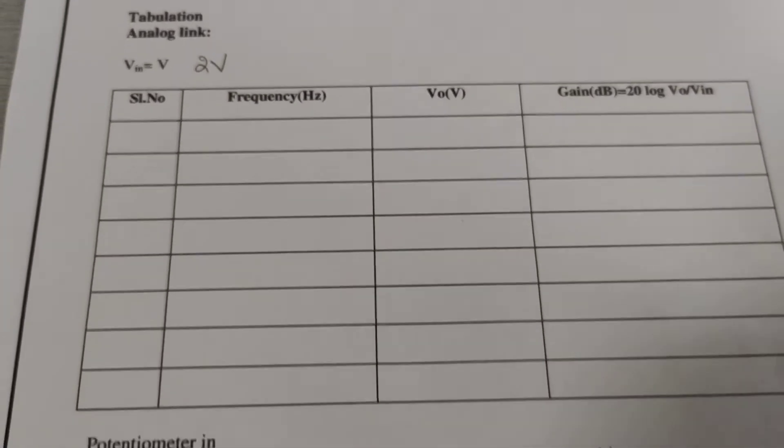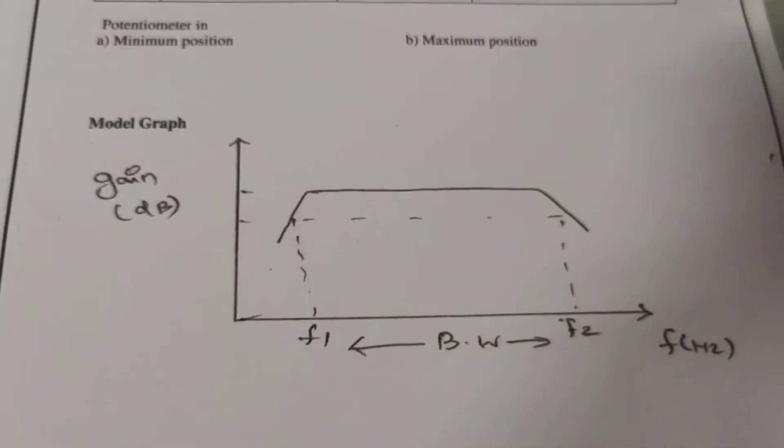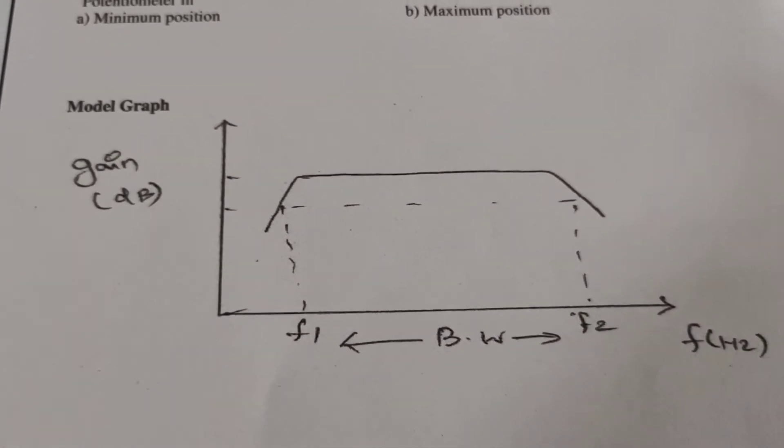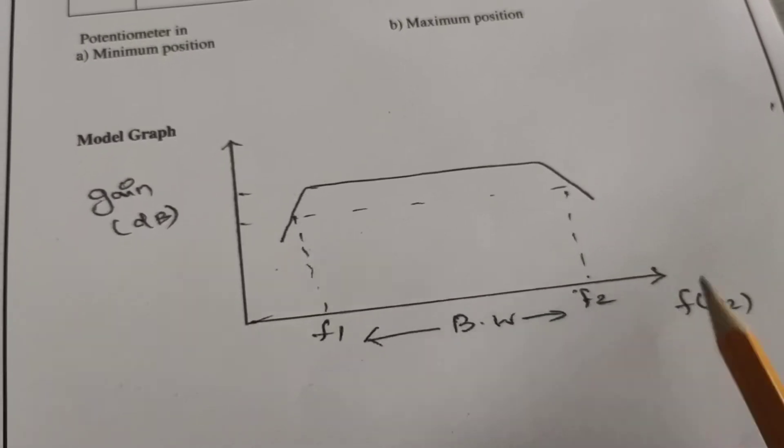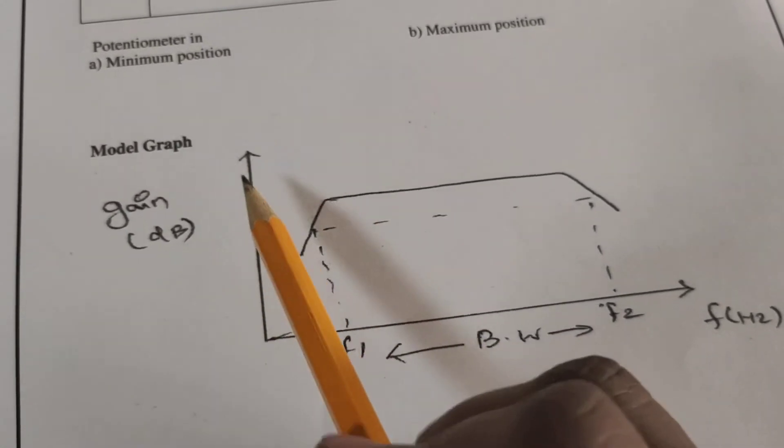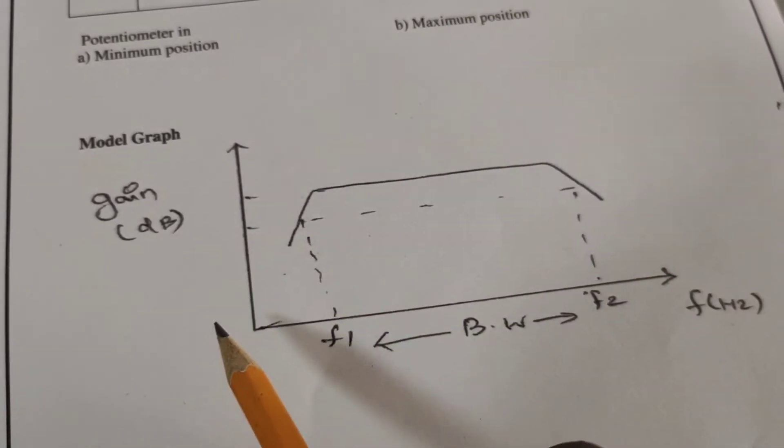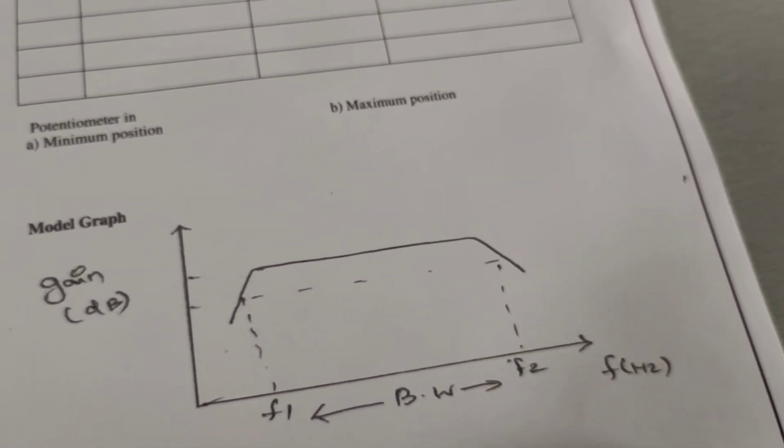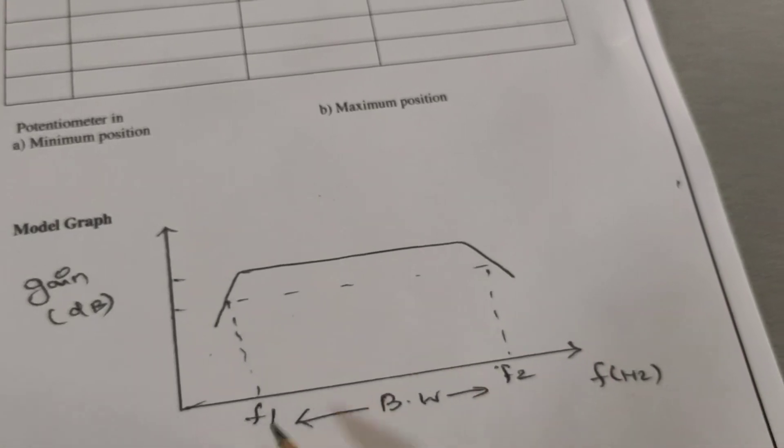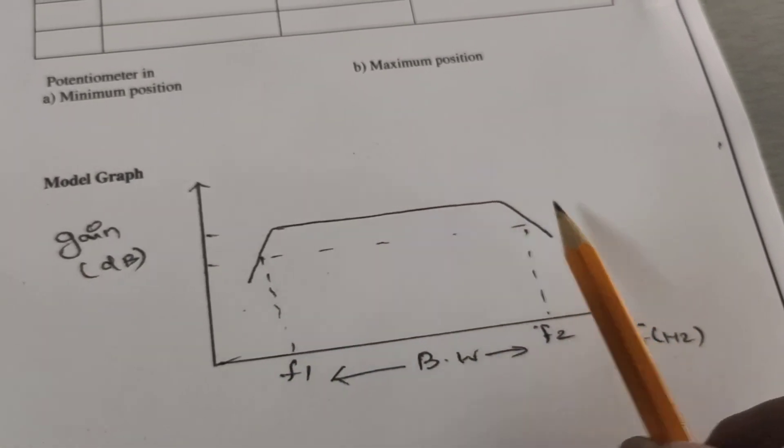This is the model graph. On the x-axis is frequency. On the y-axis is gain, gain in decibels. This is a logarithmic plot. From this plot, we measure the bandwidth.